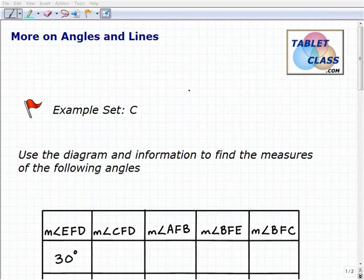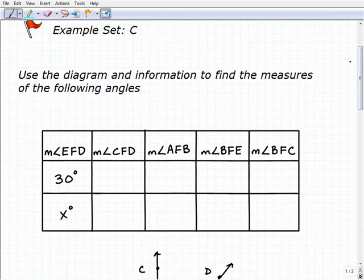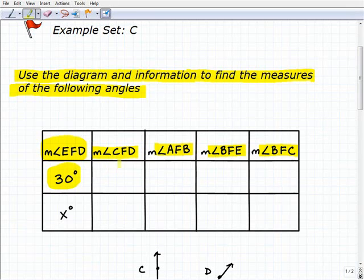Hello, welcome to the video on more on angles and lines. This is our third example set, example set C. We're going to fill in the blanks with a lot of information we're being asked to find. Let's read the problem. We're going to use a diagram and some given information to find the measures of all these particular angles. We have a measure of angle EFD, and we're told to find all these other angle measures when that particular angle EFD is 30 degrees. And then we're asked to find the angle measure of all these different angles when it's just simply X degrees.